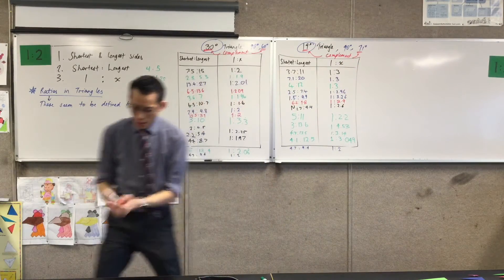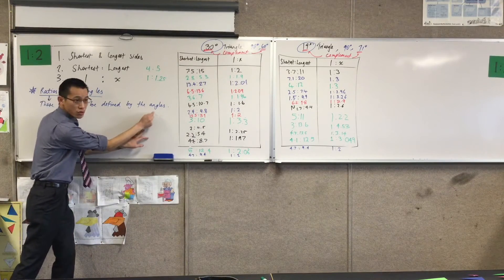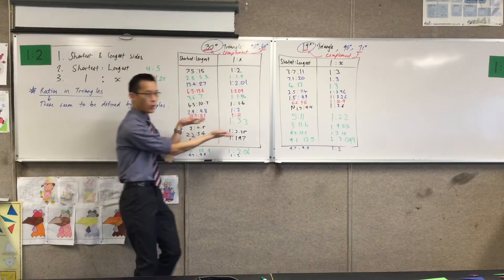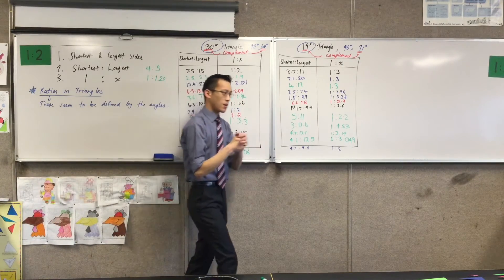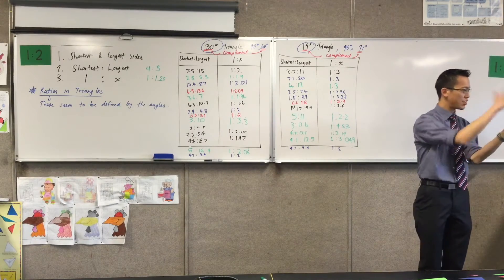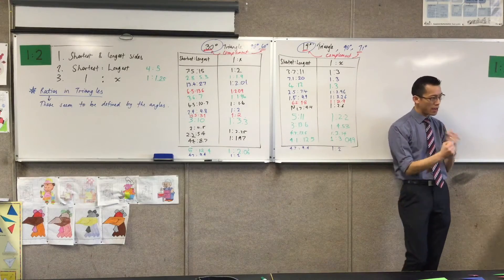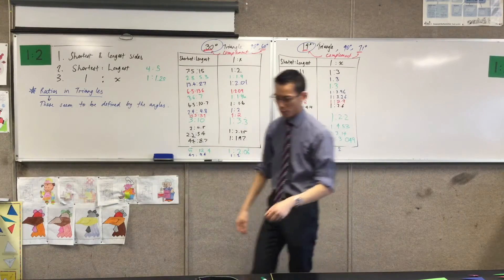So, what we've noticed is, these seem to be defined by the angles. You know what the angles are. The angles will tell you what's going on with these ratios. But the question is, why? Why would, like, angles is something to do with rotation? Like, how far have you turned around? Whereas, this is all about lengths. So, why are they connected? And this is why I gave you blue chalk.